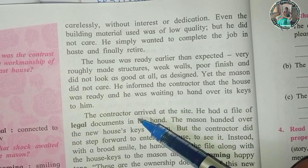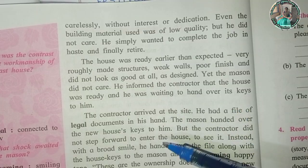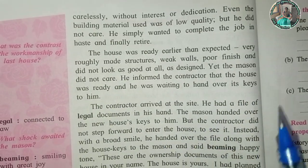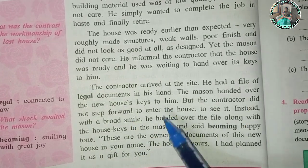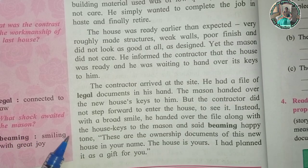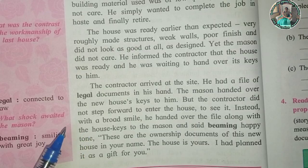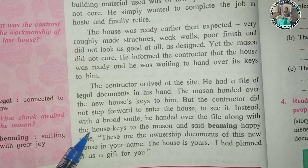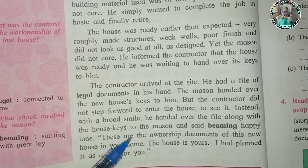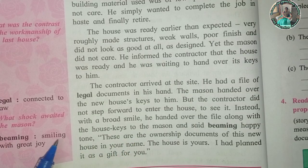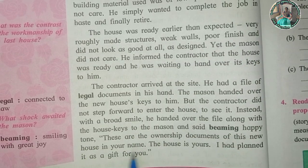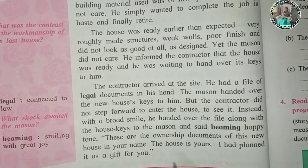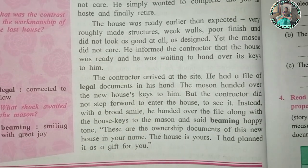He informed the contractor that the house was ready and he was waiting to hand over the keys. The contractor arrived with a file of legal documents in his hand. The mason handed over the new house keys to him. The contractor did not step forward to enter the house; instead, with a broad smile — beaming, which means filled with great joy — he handed over the file along with the house keys back to the mason and said: 'These are the ownership documents of this new house in your name. The house is yours. I had planned it as a gift for you.'